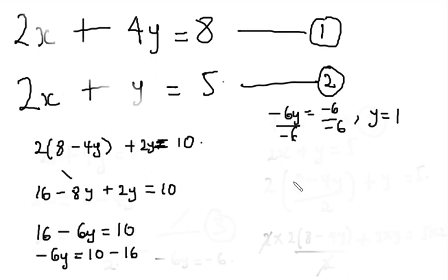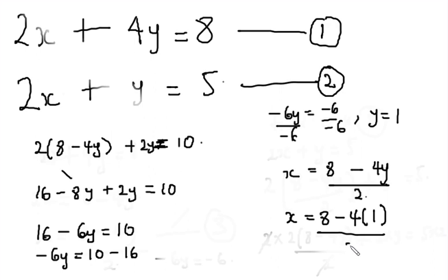Recall that we already had an equation of x is equal to 8 minus 4y over 2. So you can just plug the value of y directly from here. We would say x is equal to 8 minus 4 times 1 over 2. So x is equal to 8 minus 4 divided by 2, which is 2. This means that y is equal to 1 and x is equal to 2.